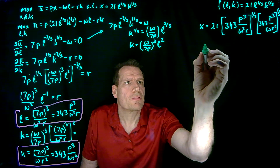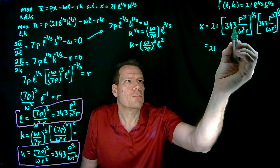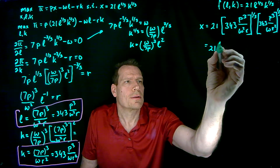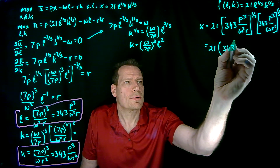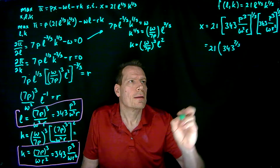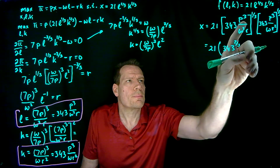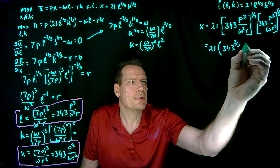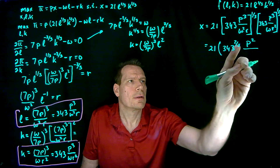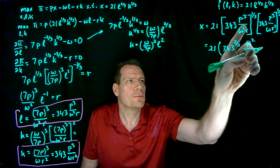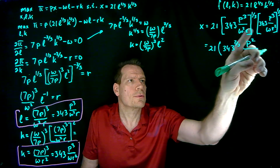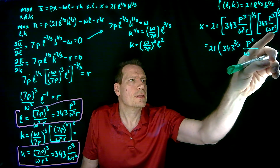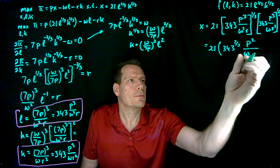Now we simplify: 21 times 343 to the one-third times 343 to the one-third gives 343 to the two-thirds. P to the third to the one-third gives P, and another P to the third to the one-third gives P — so P times P is P squared. W squared to the one-third is W to the two-thirds, and W to the one-third — so two-thirds plus one-third gives W. And R to the one-third times R to the two-thirds gives R.